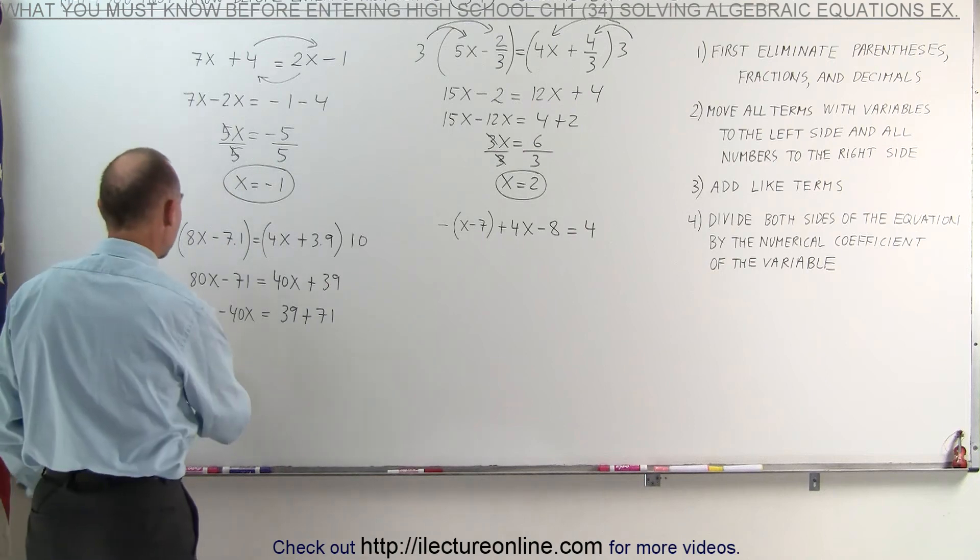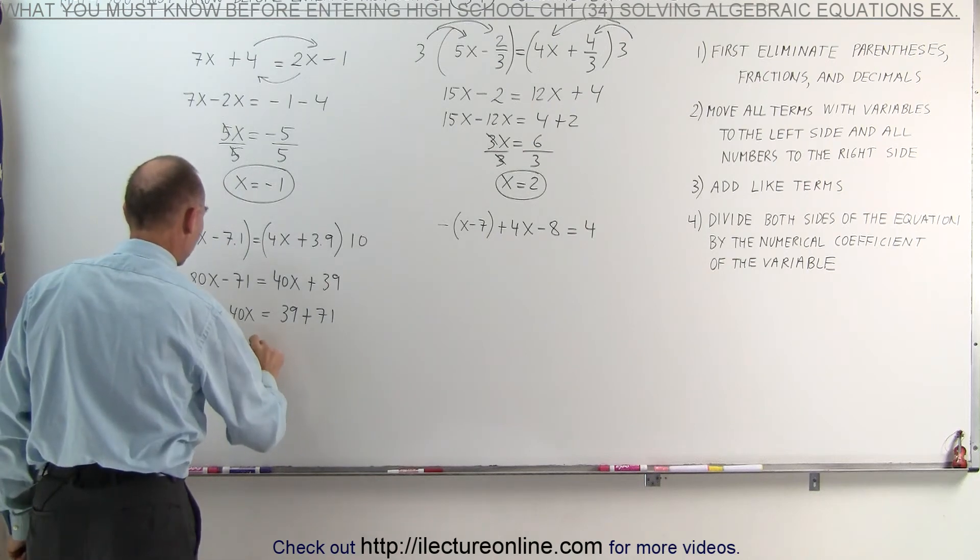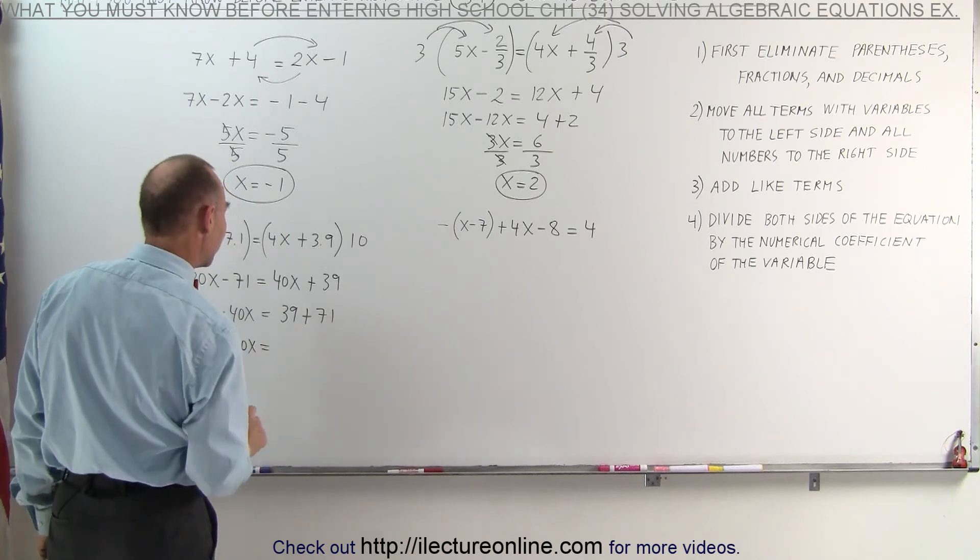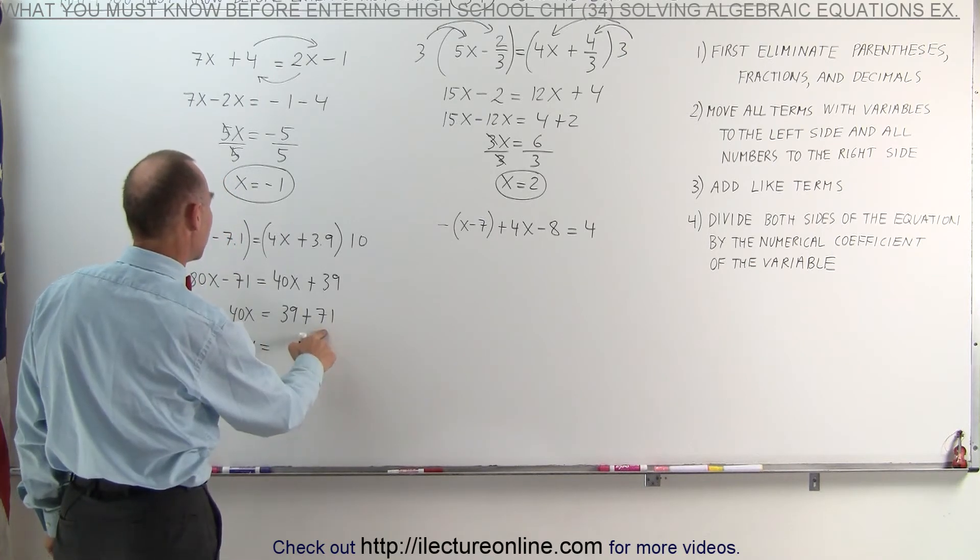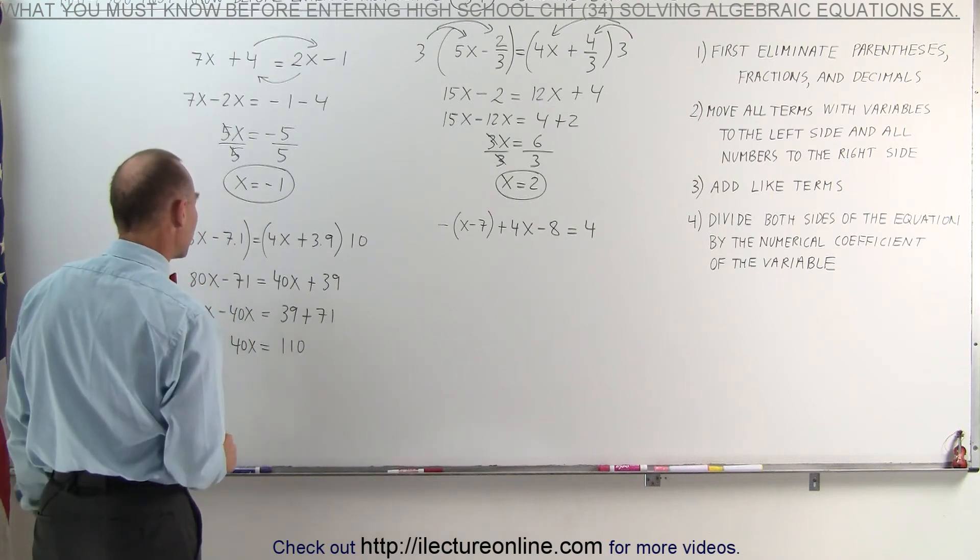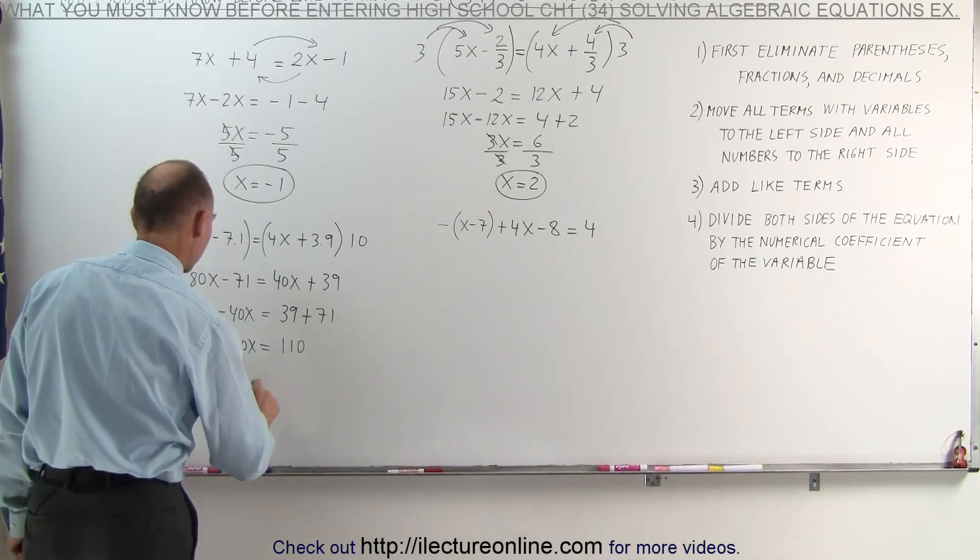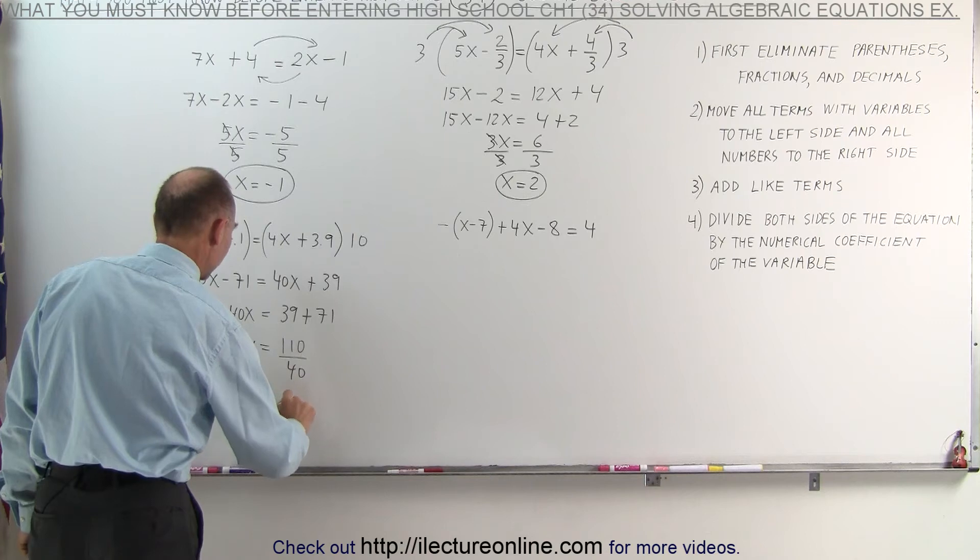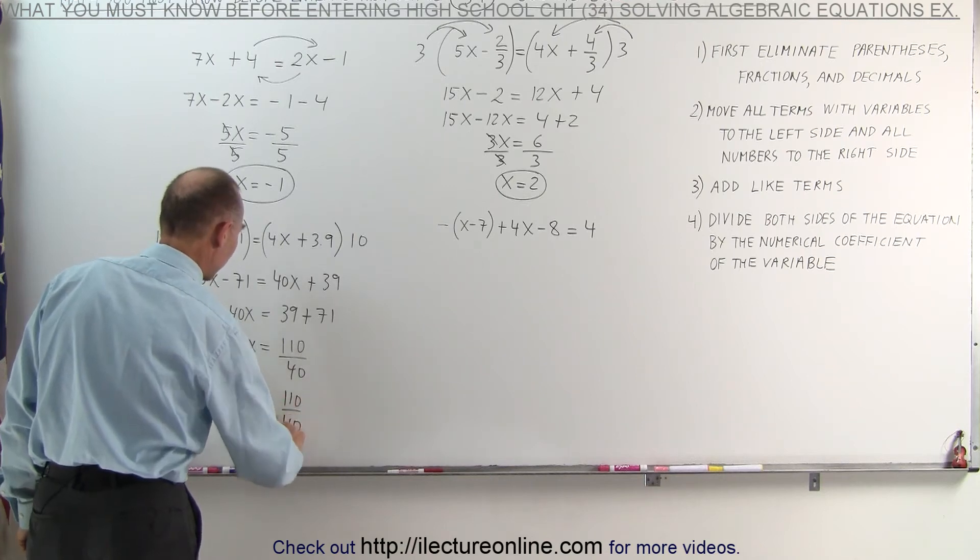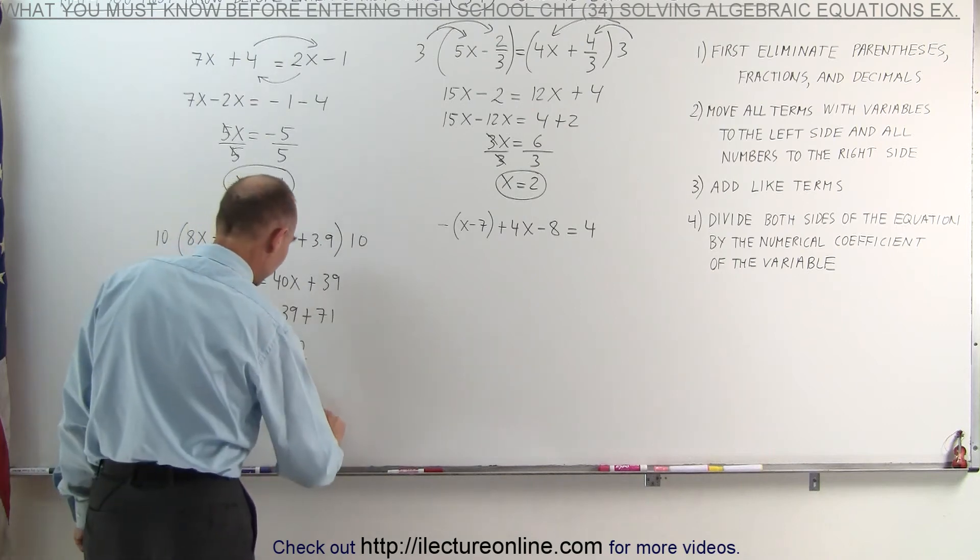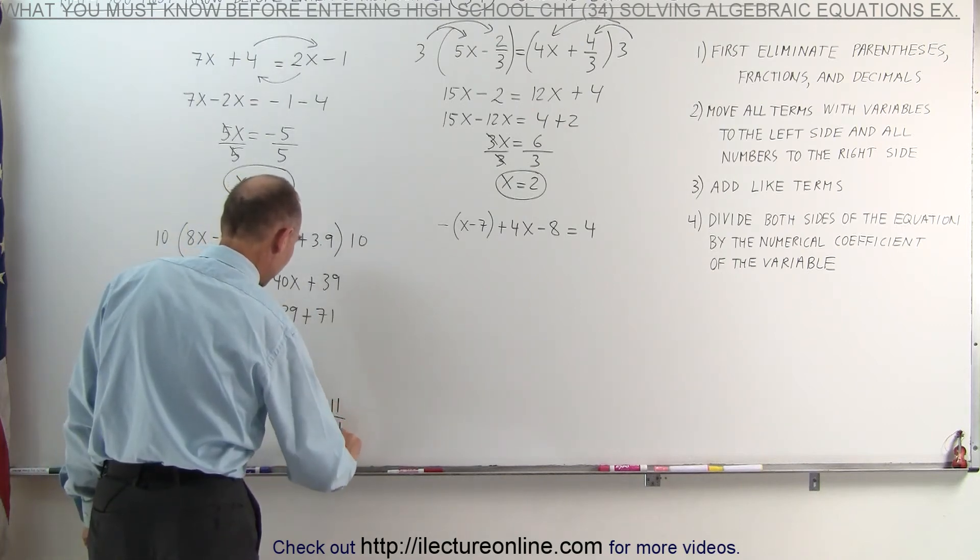Now we combine like terms. 80x minus 40x is 40x. And 39 plus 71 is, let's see here, that would be 110. Then I divide both sides of the equation by the numerical coefficient. Divide both sides by 40. We get x is equal to 110 over 40. Now we can simplify that by dividing both top and bottom by 10. So this becomes 11 divided by 4.